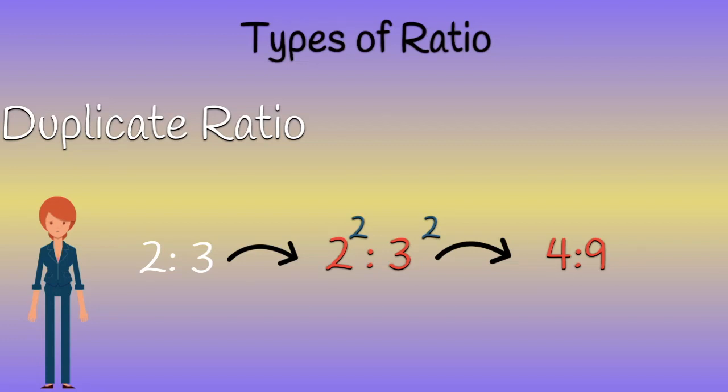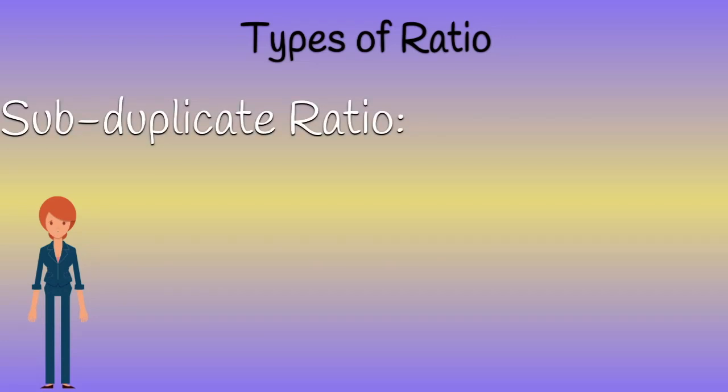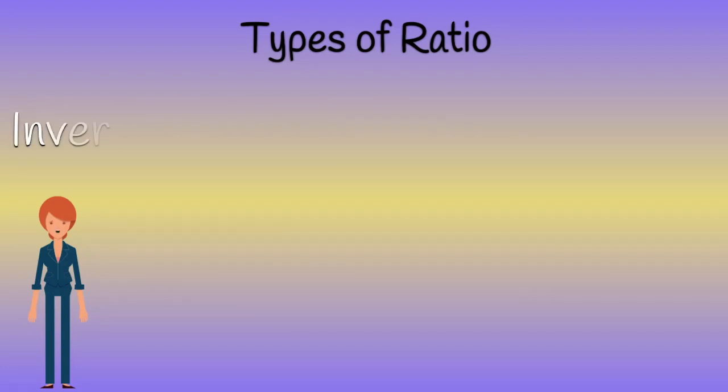Sub-duplicate ratio: If a to b is a ratio, then its sub-duplicate ratio is root a to root b. For example, if 16 to 25 is a ratio, then its sub-duplicate ratio is root of 16 to root of 25, which is equal to four to five.